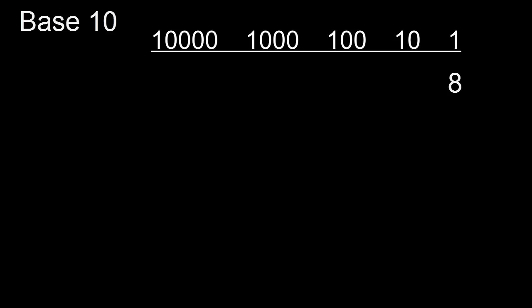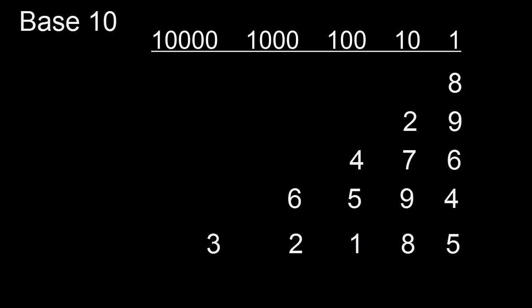The first number I'm going to write down is eight — we don't need any big groups for this, it's just eight on its own. Twenty-nine is two groups of ten plus nine. The next number, four hundred and seventy-six: that's four lots of a hundred, seven lots of ten, plus six. Six thousand five hundred and ninety-four: that's six lots of a thousand, five lots of a hundred, nine lots of ten and four. And finally, thirty-two thousand, one hundred and eighty-five: that's three lots of ten thousand — i.e. thirty thousand — two lots of a thousand, one lot of a hundred, eight lots of ten and five.